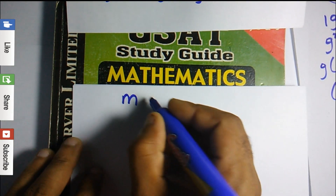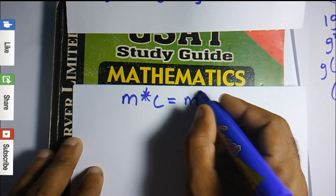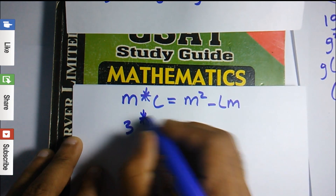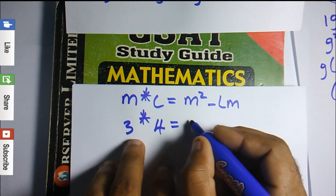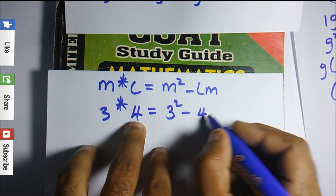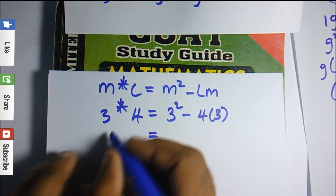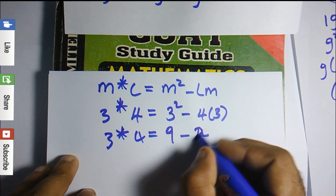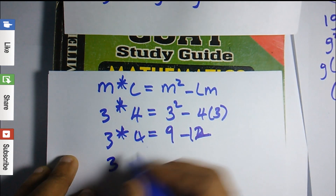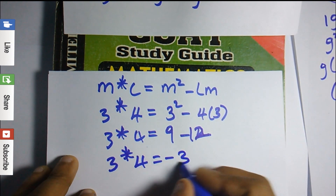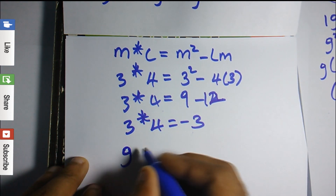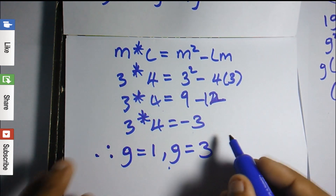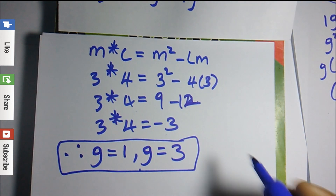Now testing the other value, g equals 3: 3★4 equals three squared minus four times three, which is 9 minus 12, which equals negative three. That also gives us negative three. So both values work, and we conclude that g equals 1 and g equals 3 are both valid answers for this question.